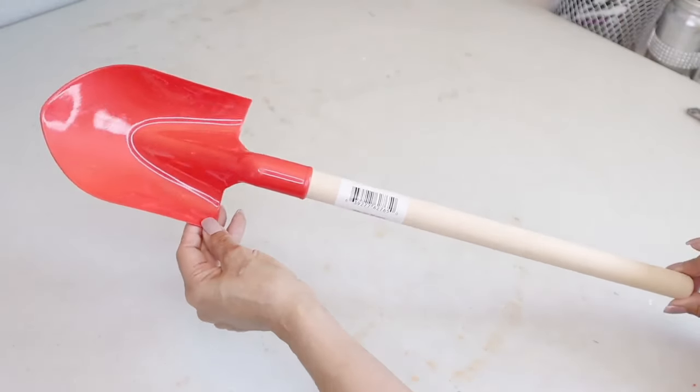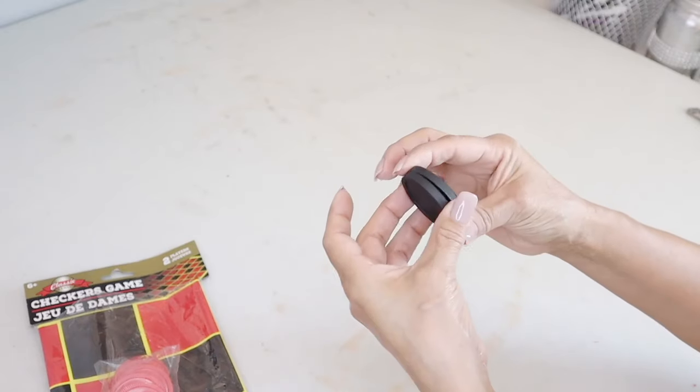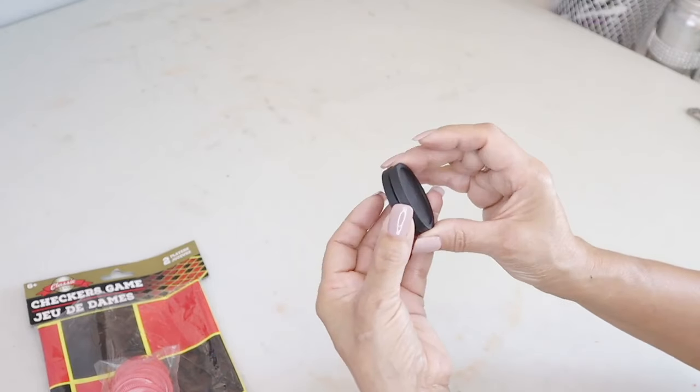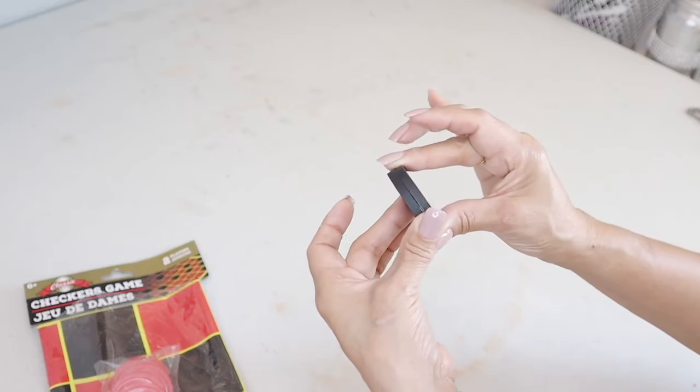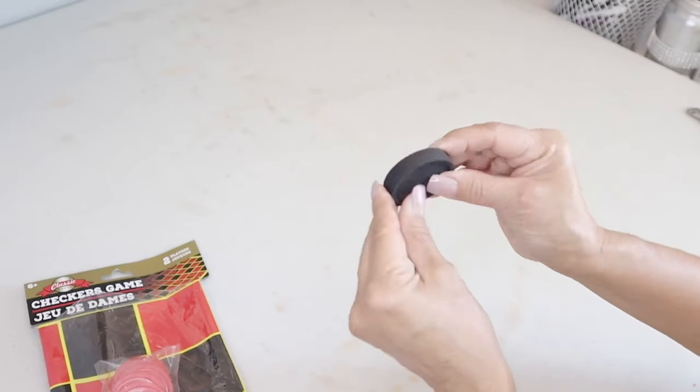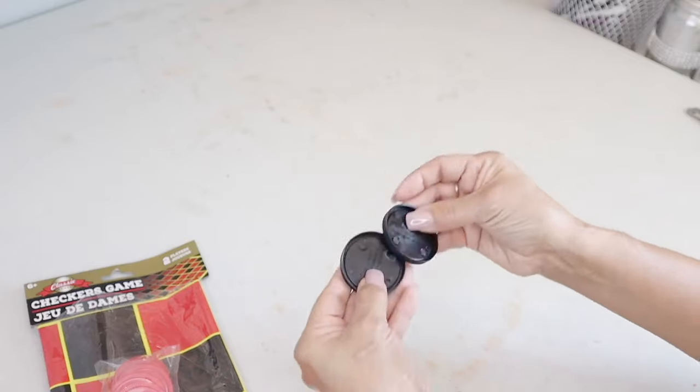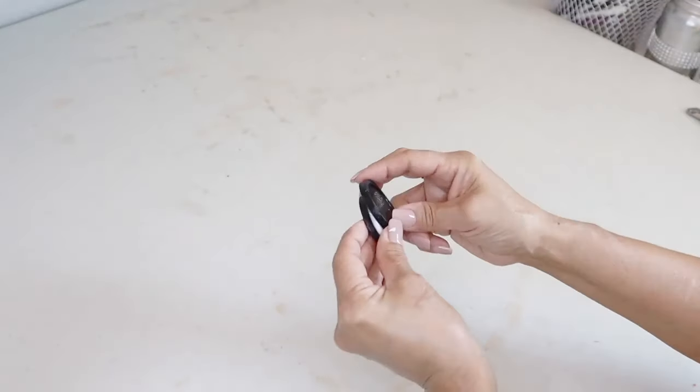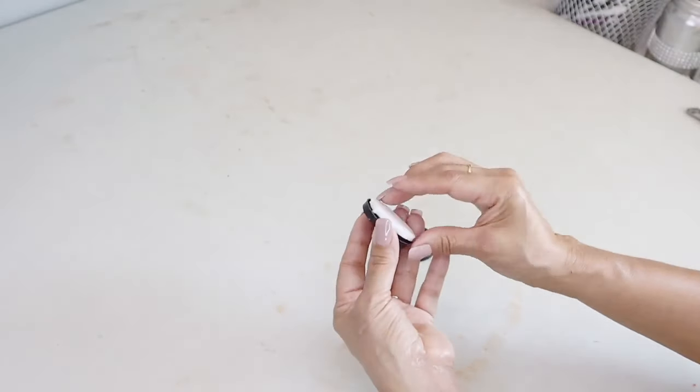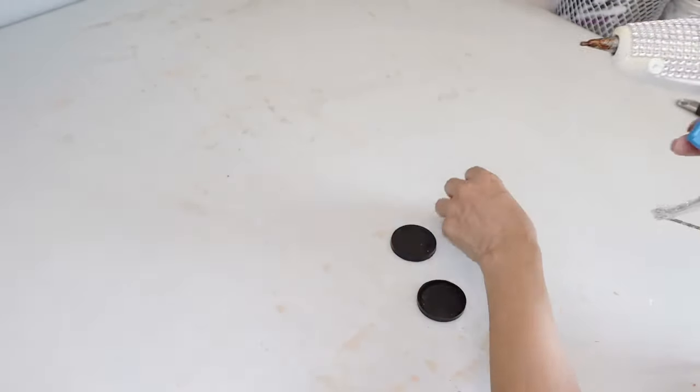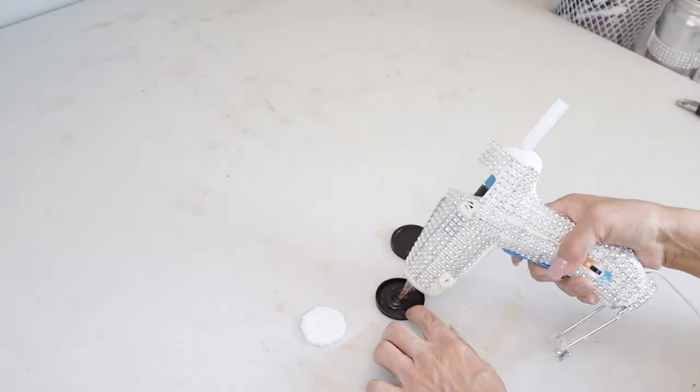Okay, so the first thing I'm going to do is create the wheel for the wheelbarrow. I'm going to be using these two round circles, and I'm going to hot glue them together. Before I glue the two pieces together, I'm going to insert a piece of brown foam board that I cut out.